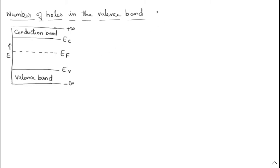The number of holes can be represented by small p, or n suffix h. What is n suffix h? It means the number of holes. Either p or n_h, both can be used to denote the number of holes in the valency band. Let us start our discussion.